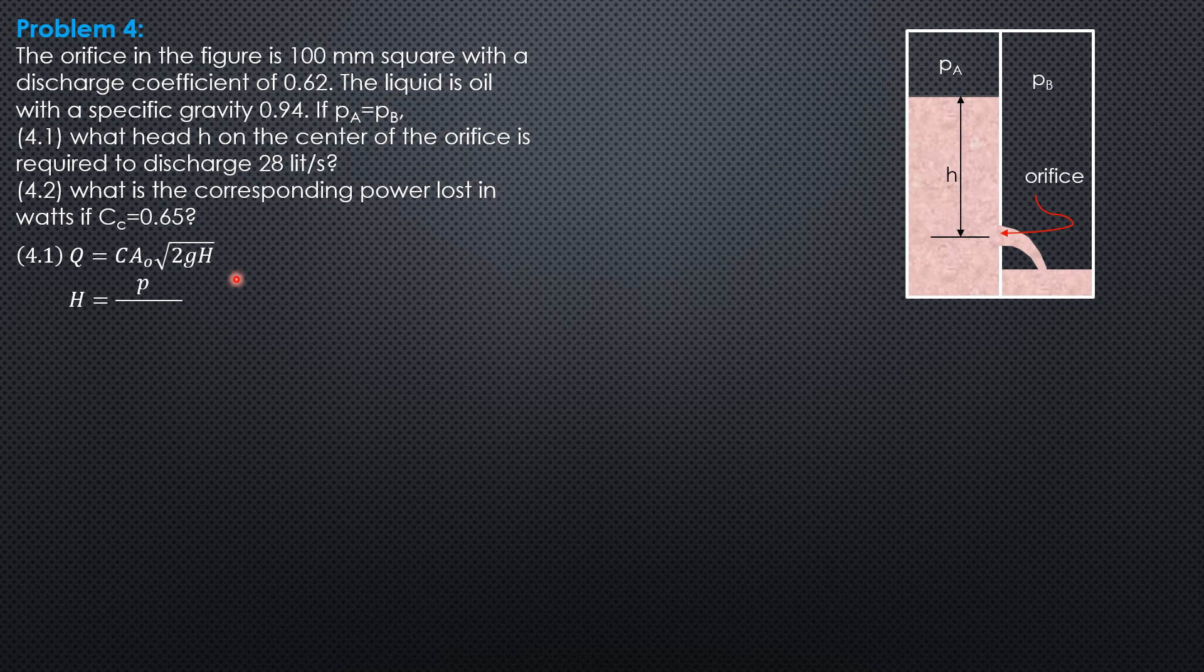So h is pressure head at A over specific weight of oil plus h in oil minus pressure head at B in terms of oil. But P sub A equals P sub B, so big H is just small h.